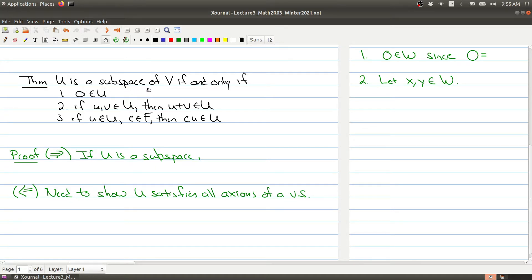So it says that U is a subspace if and only if the zero element belongs to your subset. If you take two elements u and v, then u plus v is also in U. So this is closure under addition. And then the third statement says that if you take any vector inside of U and any constant in your field, then c times u is also inside of U. So this is closure under scalar multiplication. And so we'll prove this.